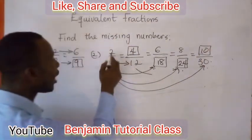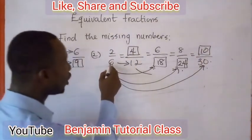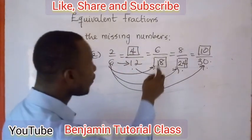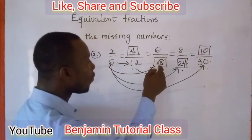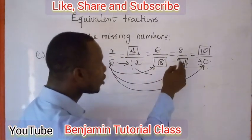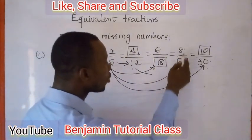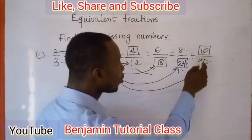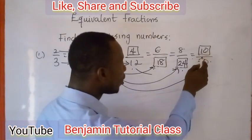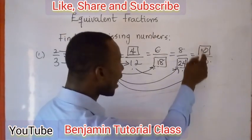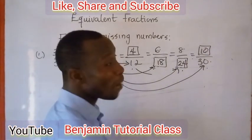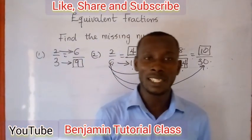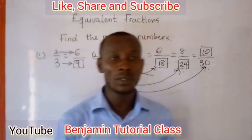So we discover that 2 over 6 is equivalent to 4 over 12, equivalent to 6 over 18, equivalent to 8 over 24, and equivalent to 10 over 30. I believe you are blessed with today's class. God bless you.